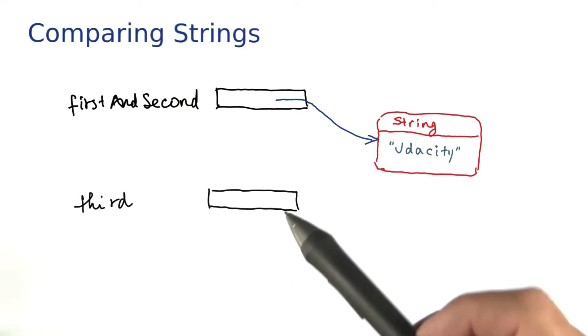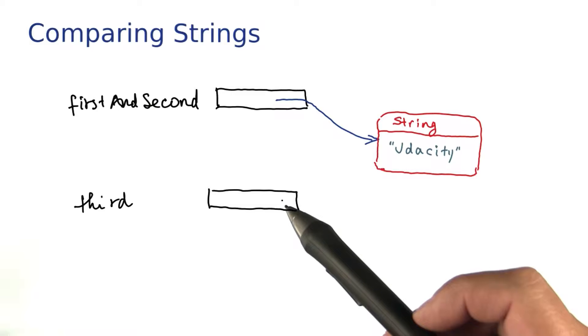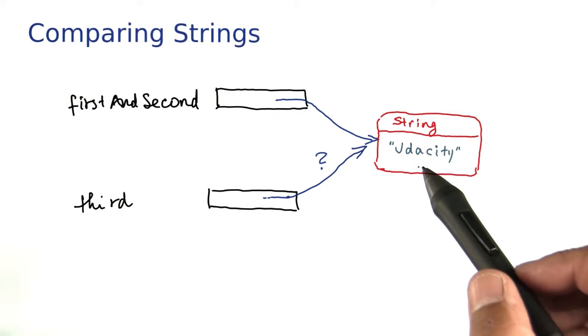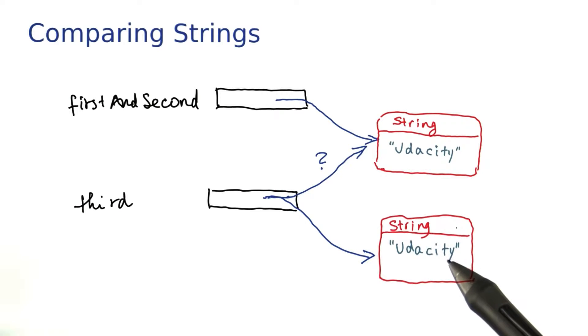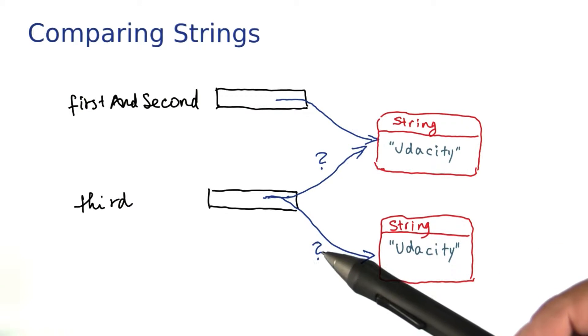Let's look at our other variable. Again, a variable just holds a reference. Now, a reference to which object? Is it a reference to the same string object or to a different one? And that is the key question.